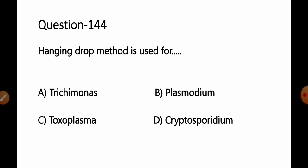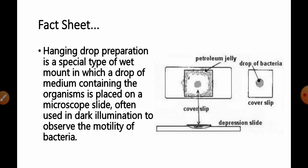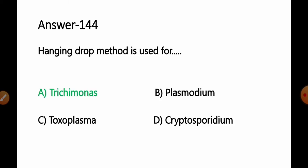Question 144: Hanging drop method is used for: option A Trichomonas, B Plasmodium, C Toxoplasma, D Cryptosporidium. Hanging drop preparation is a special type of wet mount in which a drop of medium containing the organism is placed on a microscopic slide, often used in dark-field illumination to observe the motility of bacteria or organisms. Trichomonas is a highly motile organism, so option A Trichomonas is the correct answer for which the hanging drop method can be used.